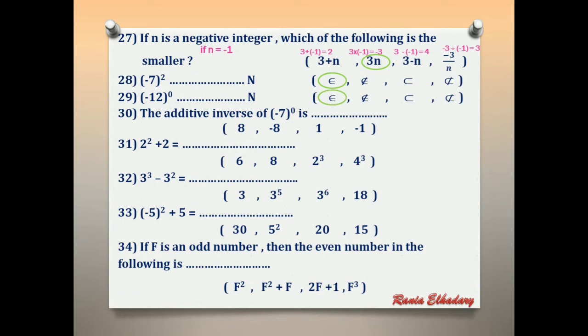Number 30: the additive inverse of (negative 7) power 0. (Negative 7) power 0 = 1. The additive inverse of 1 is negative 1.